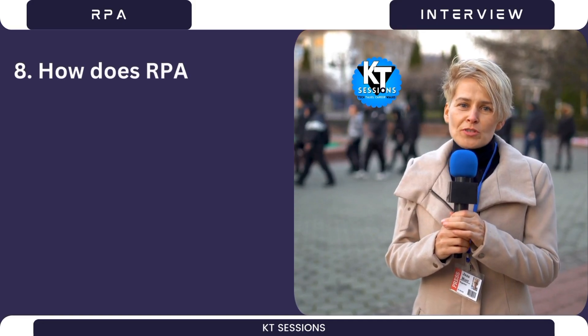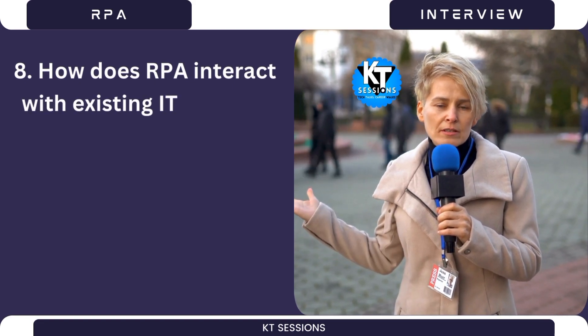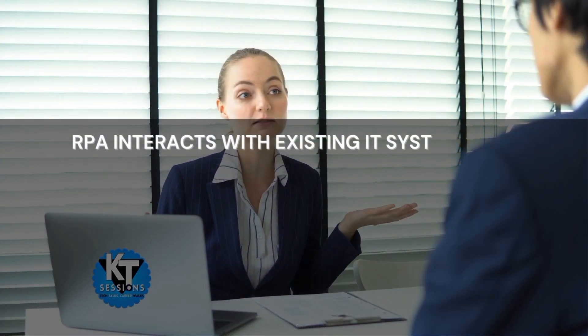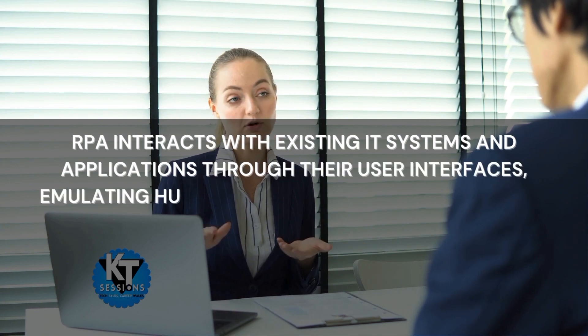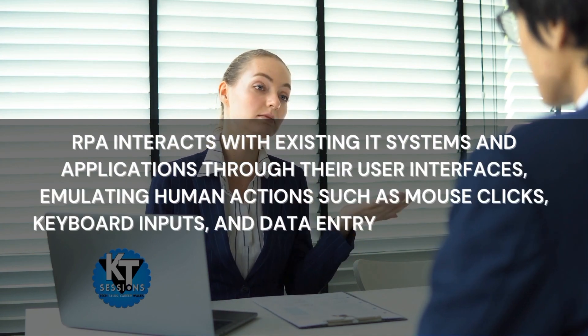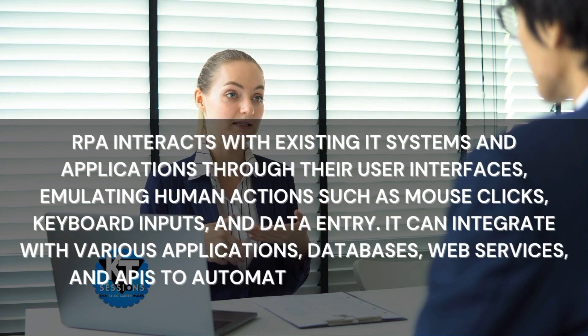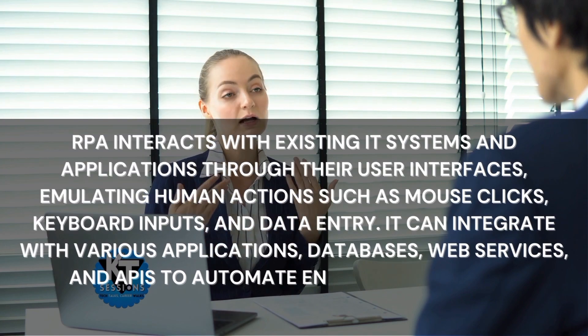Question 8: How does RPA interact with existing IT systems and applications? RPA interacts with existing IT systems and applications through their user interfaces, emulating human actions such as mouse clicks, keyboard inputs, and data entry. It can integrate with various applications, databases, web services, and APIs to automate end-to-end business processes.